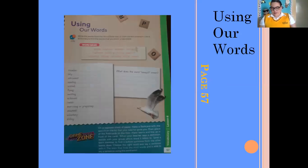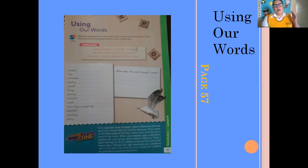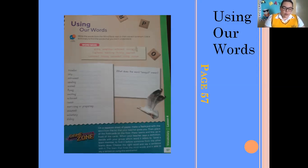Please go to page 57. Using our words — you are going to solve this page. You already know what you have to do in this page because we always do a page like this. So just listen to the instructions: write the words from the word bank next to their correct synonym. So you are going to need a dictionary.